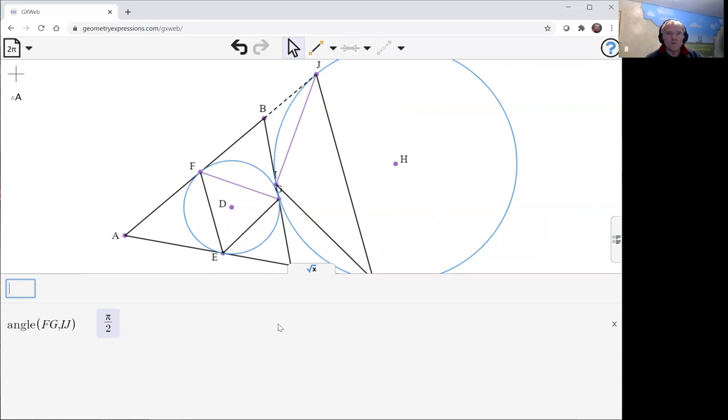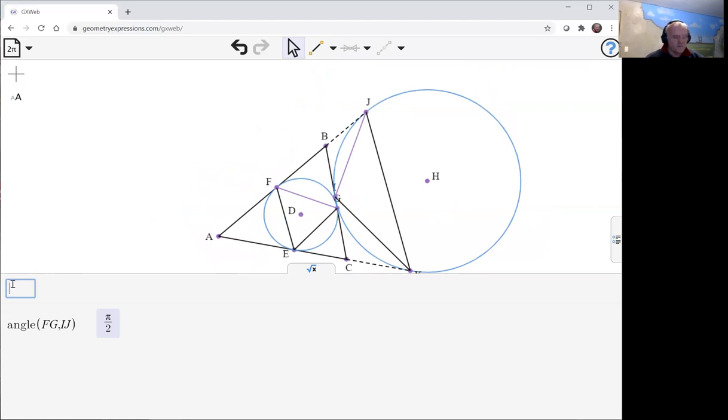It would come as no surprise then that the angle between EG and IK is also 52°.